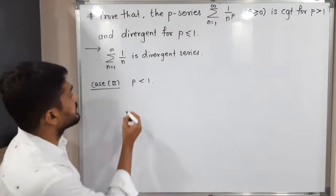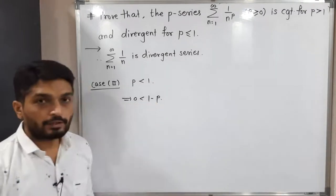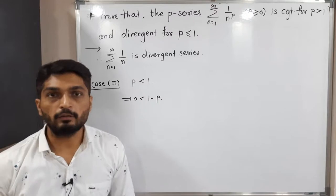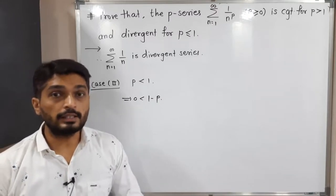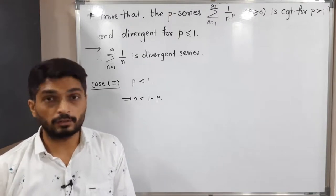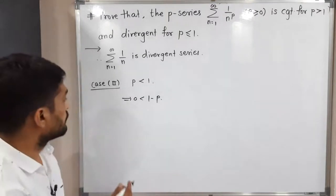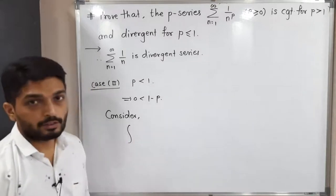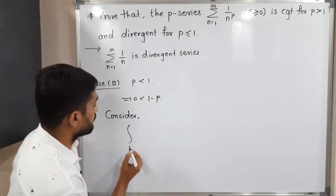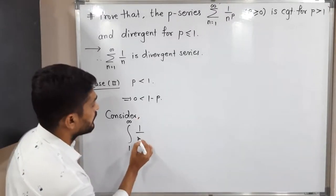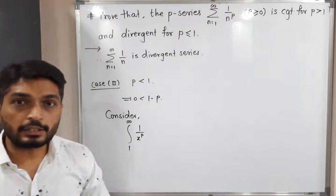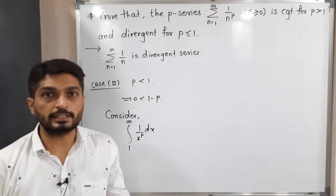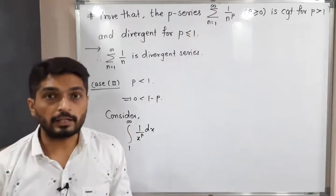Case 2: p is less than 1. If p is less than 1, then 0 is less than 1 minus p, meaning 1 minus p is a positive quantity. Here we are going to use Cauchy's integral test to check whether the series is convergent or not. In Cauchy's integral test, we replace the summation by integration, keeping the same limits 1 to infinity, and replace n by x, giving the integral of 1 upon x^p dx.